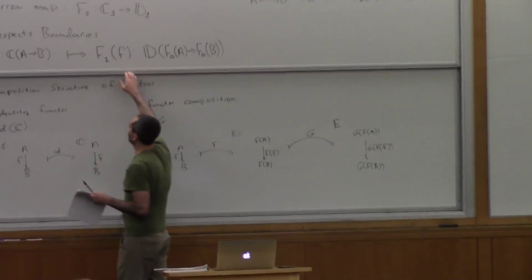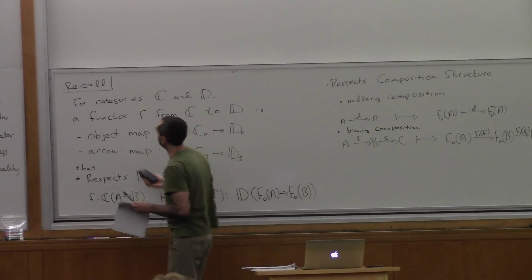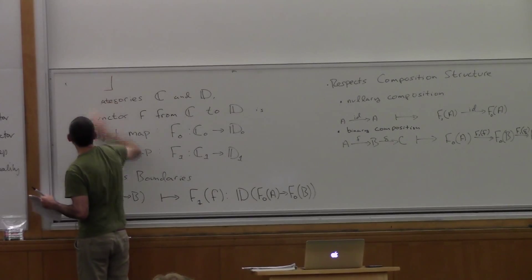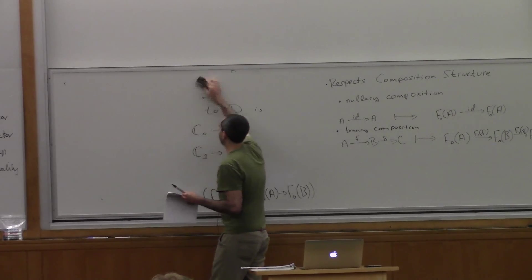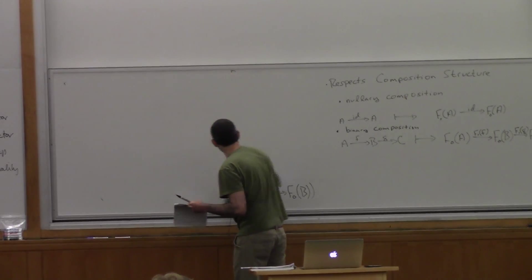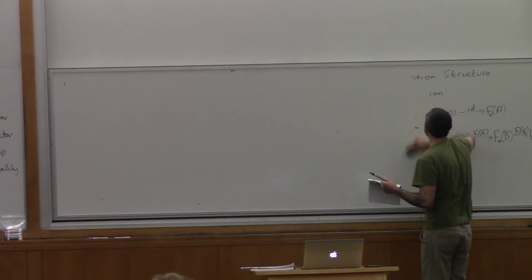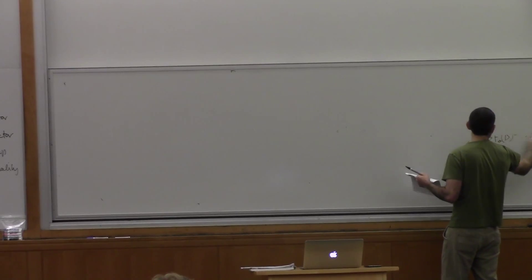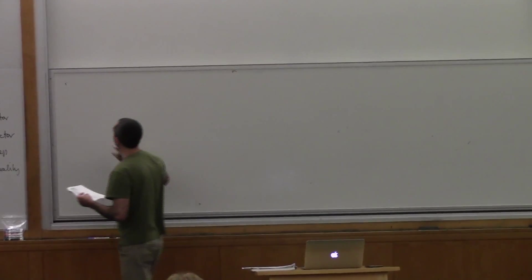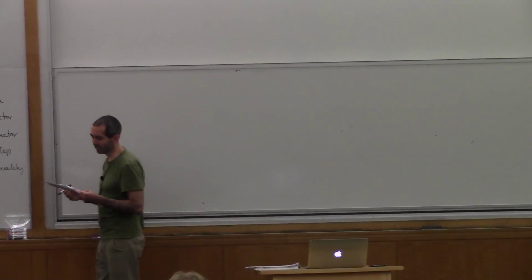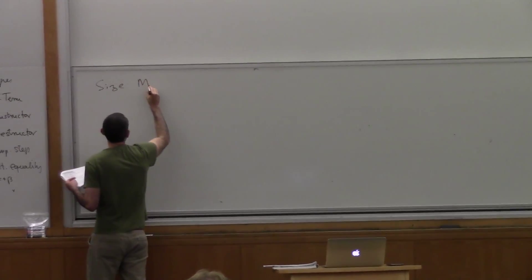But if we try to describe the category of all categories, we run into some foundational problems. They're very similar to the foundational problems we run into if we try to describe the set of all sets. So we have to be a little bit careful, and we'll have to briefly consider matters of size. I don't want this to be a course on foundations, so I'm going to tread pretty lightly. The issues are pretty much the same as come up in set theory.